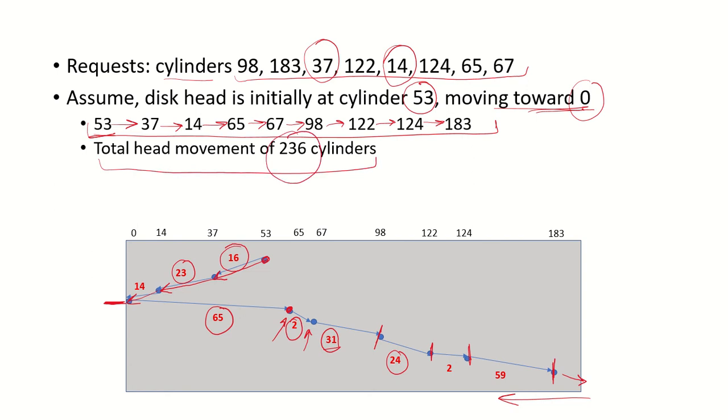Compare this to the FCFS algorithm, which required a movement of around 600 cylinders and the head was continuously moving back and forth across the disk to cater to the requests in the order in which they were arriving. You can see that the SCAN is a much more efficient way of dealing with requests, and it is very popular in disk scheduling algorithms.